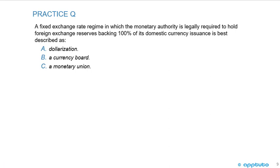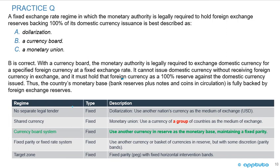One last practice question: A fixed exchange rate regime in which the monetary authority is legally required to hold foreign exchange reserves backing 100% of its domestic currency issuance is best described as: A, dollarization; B, a currency board; or C, a monetary union.